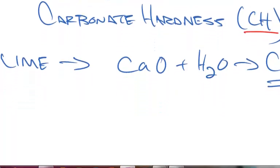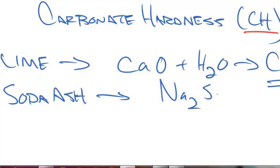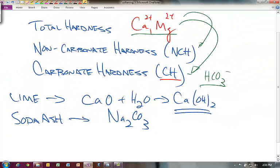The other thing that we can add to the water is soda ash, which has the formula Na₂CO₃. That's typically for non-carbonate hardness, NCH.